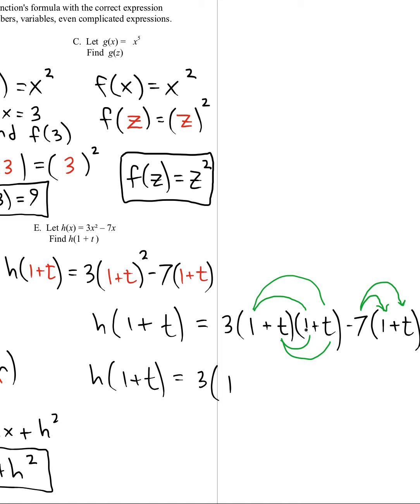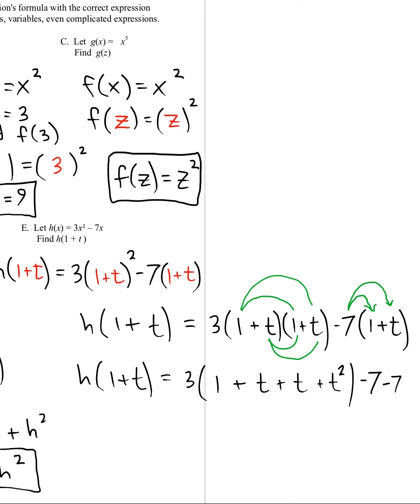One times one makes one. One times t makes t. T times one makes t. T times t makes t squared. I want to keep those parentheses on there because the three is going to be multiplied by everything. And then we'll have minus seven minus seven t. Great.